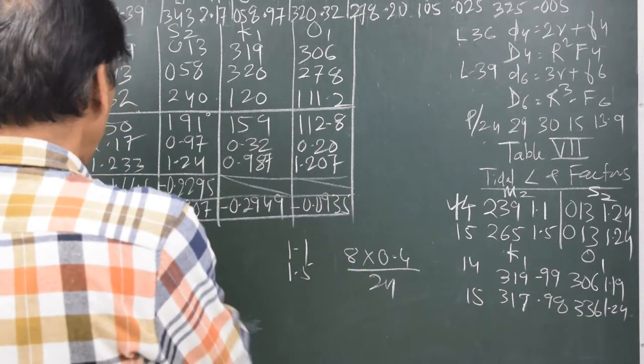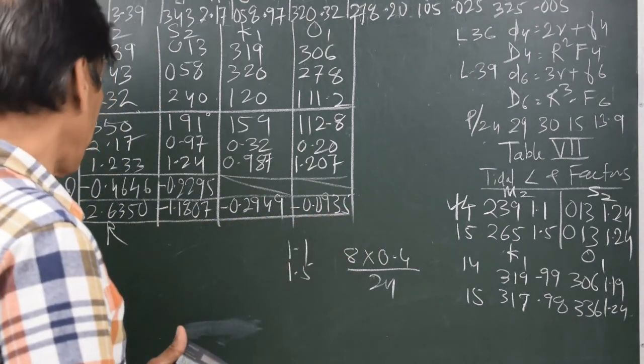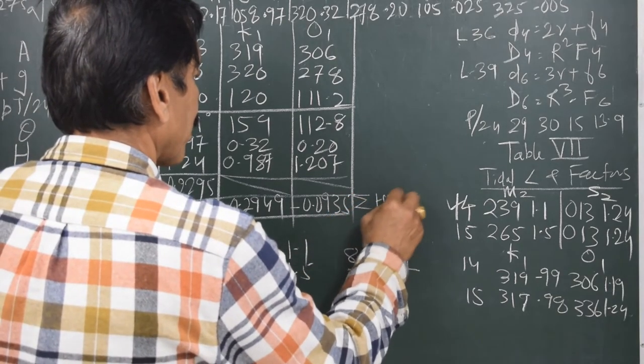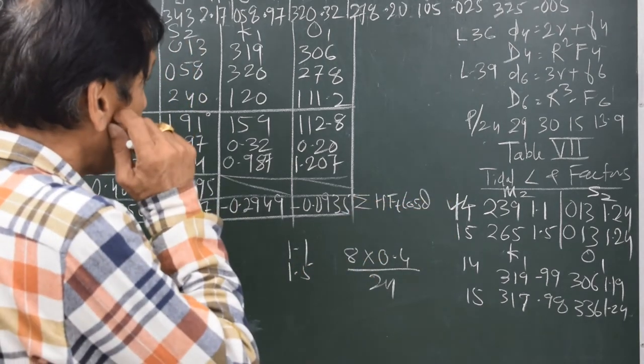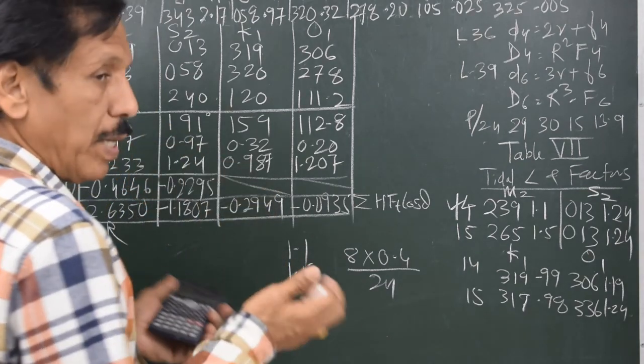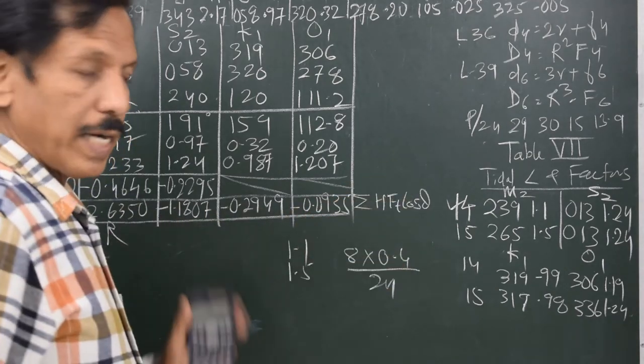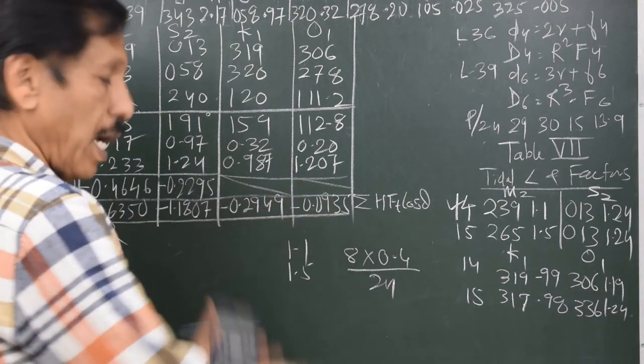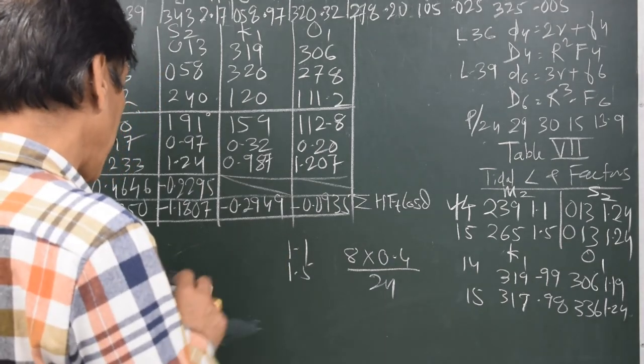I can algebraically add all the 4 values of H F_t cos theta. That will give me sigma H F_t cos theta. Sigma H F_t cos theta is a very important value. Sigma H F_t cos theta is the major quantity of the tide. So, what I will do is, algebraically I will add these 4 values. That means all the plus signs to be added together, all the minus signs to be added together. Give due respect to the minus sign. That means algebraically add them.